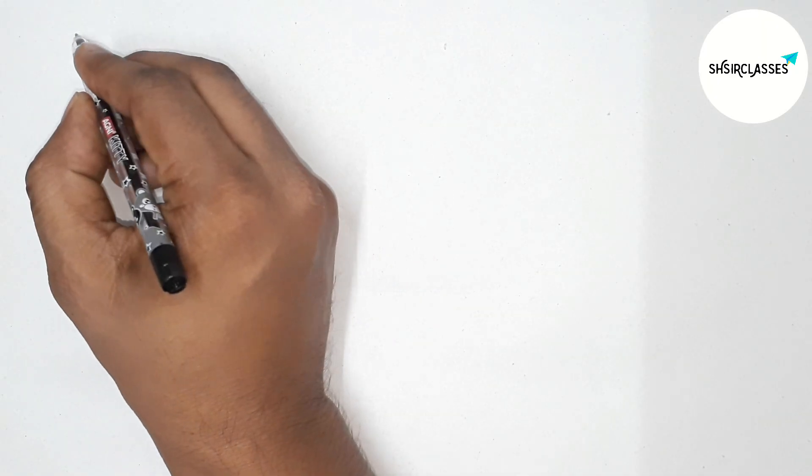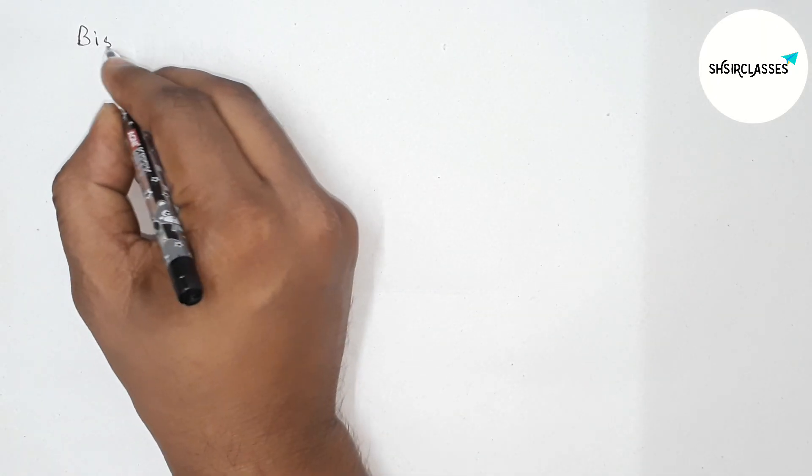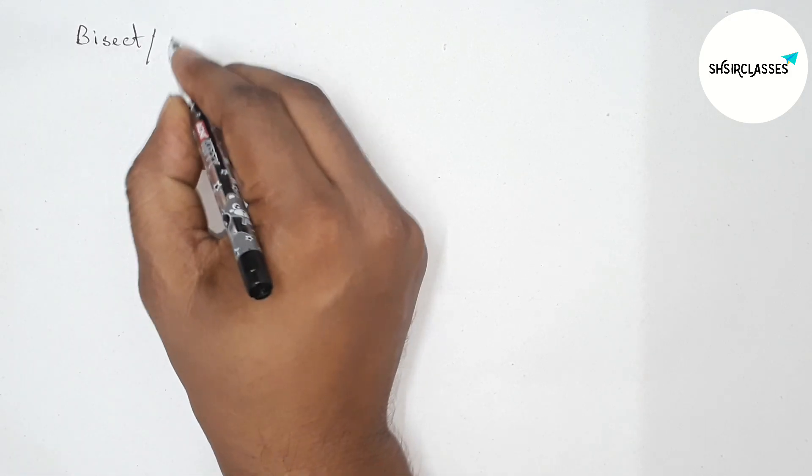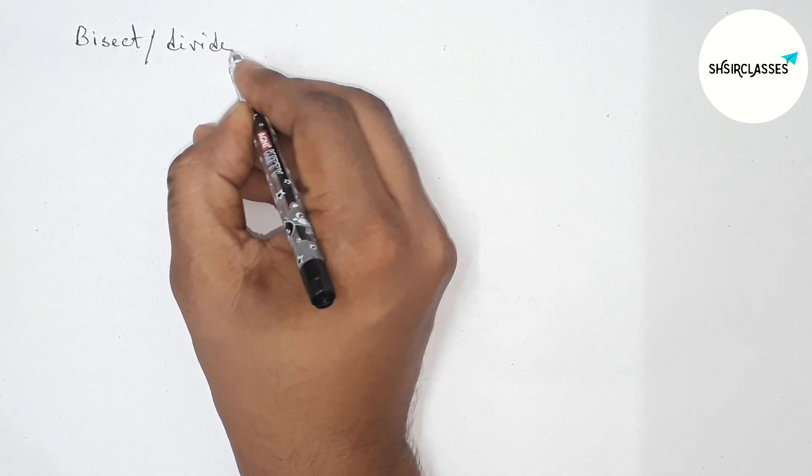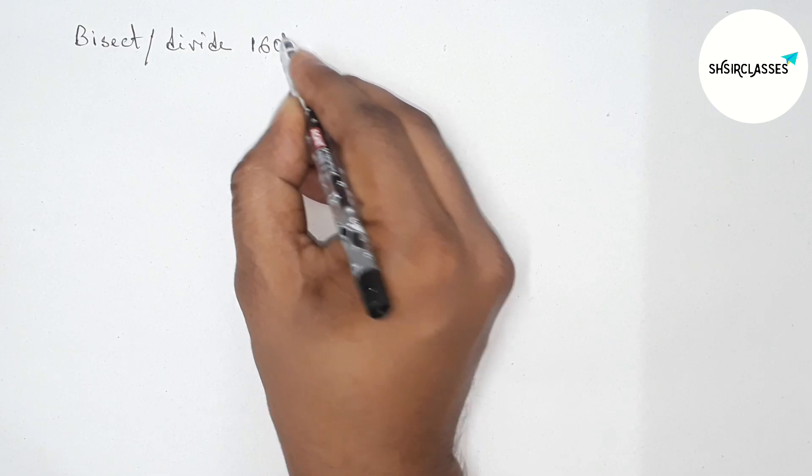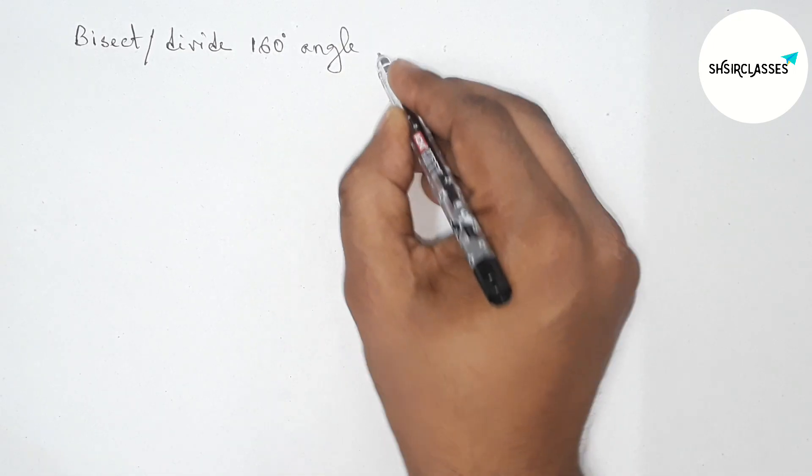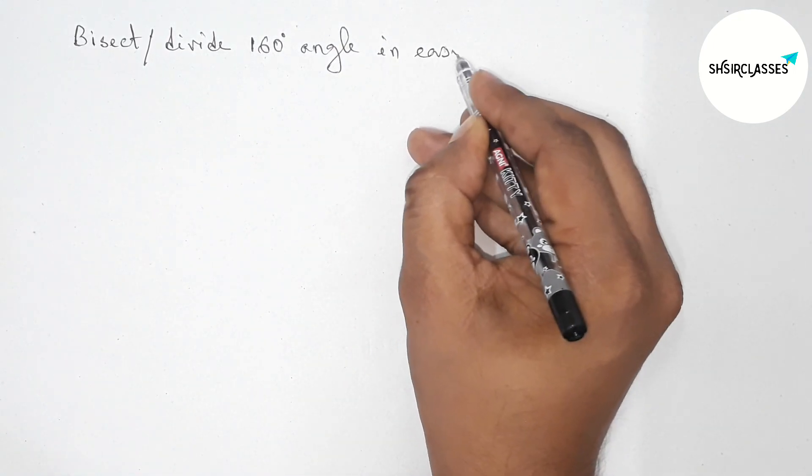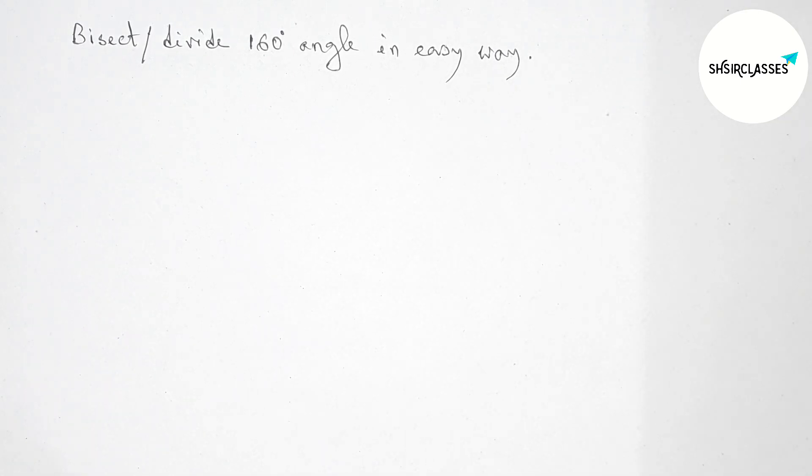Hi everyone, welcome to S.A. Share Classes. Today in this video we will bisect or divide a 160 degree angle in an easy way. Please watch the video till the end, so let's start.